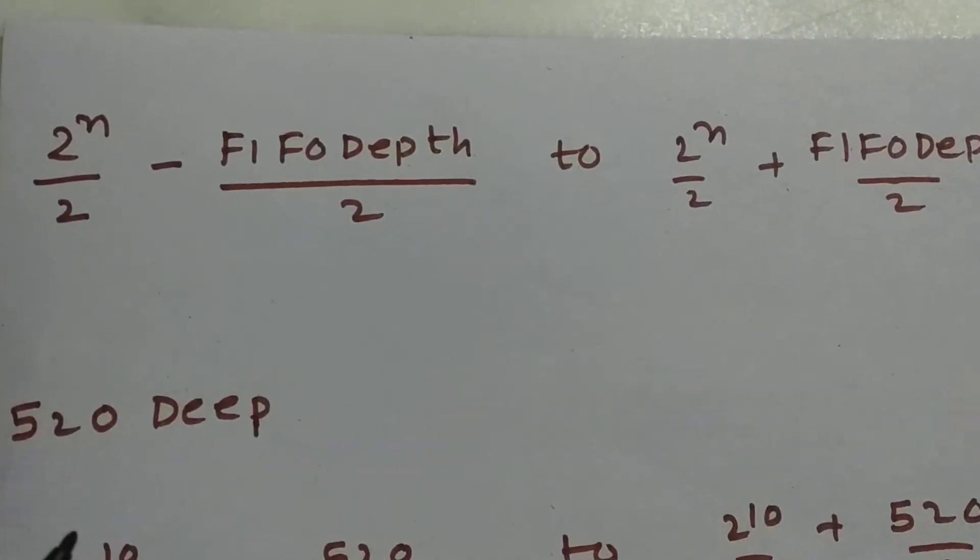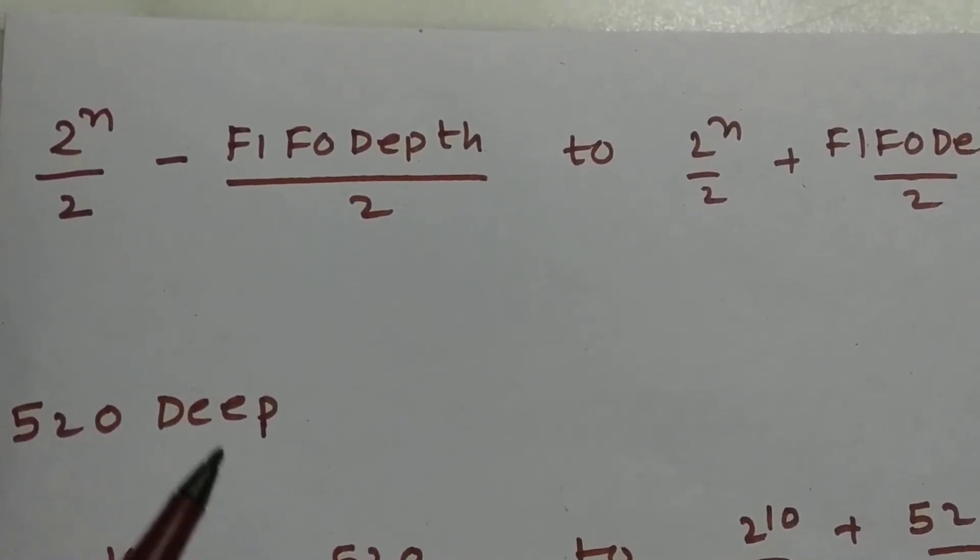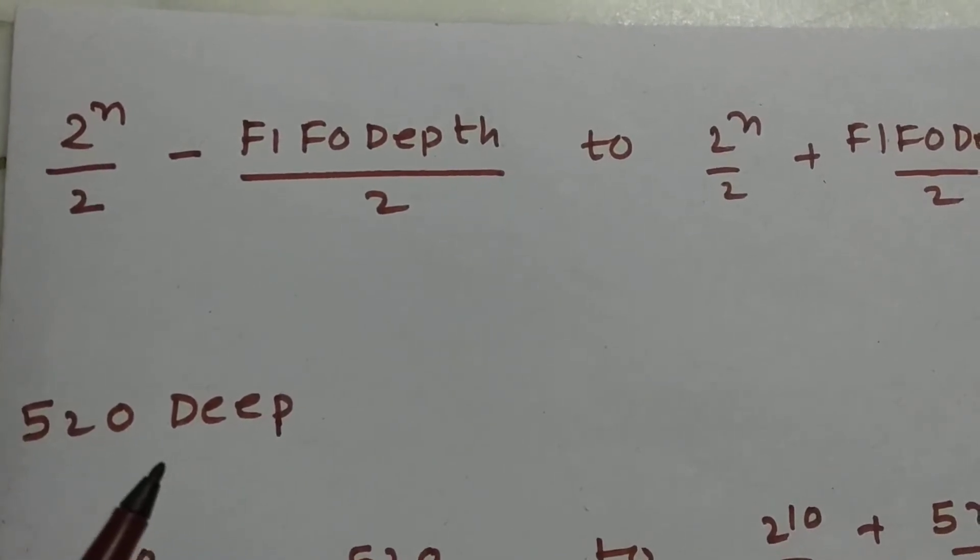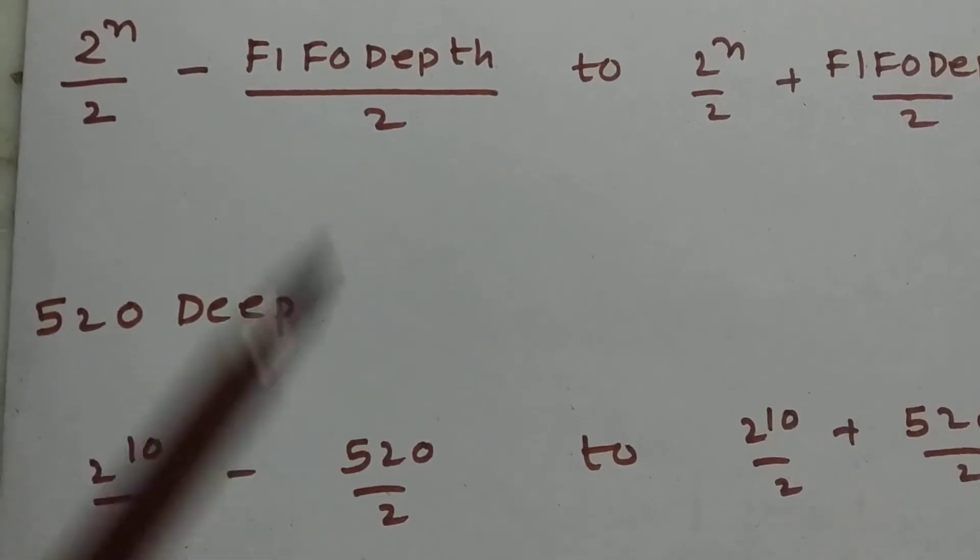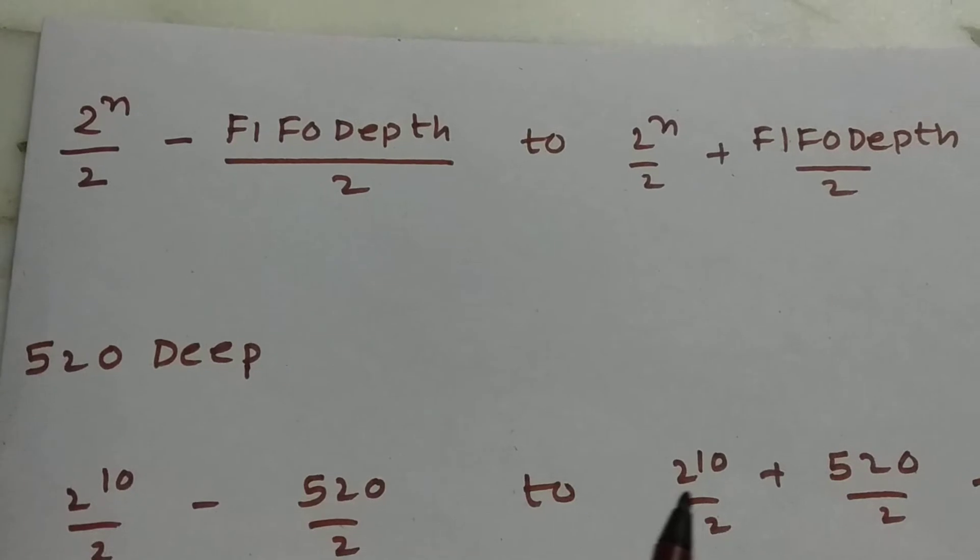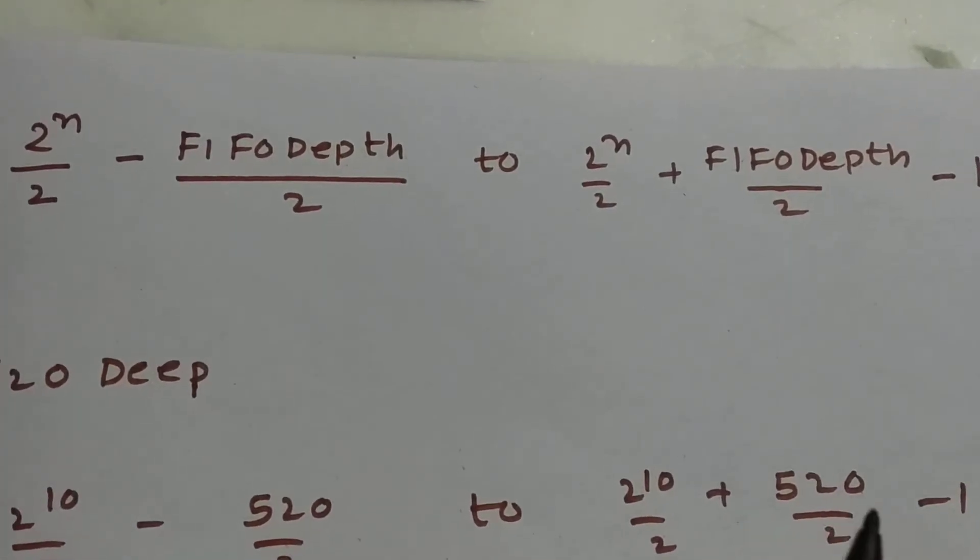Here let us consider a 520 deep FIFO. It's not the power of 2. So the nearest power above it will be 10. So it's 2 power n by 2 minus FIFO depth by 2, which is 520 by 2, till 2 power 10 by 2 plus 520 by 2 minus 1.